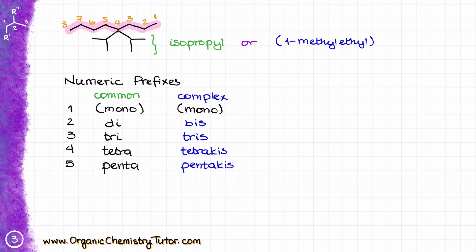Essentially, starting with four, five, six, and so on, you take your regular numeric prefix and add -kis to it. For six, you use hexakis instead of hexa; for seven, heptakis instead of hepta, and so on.